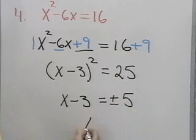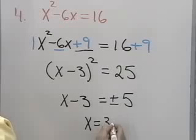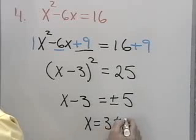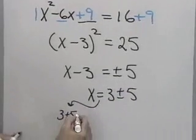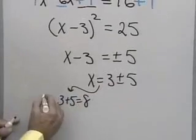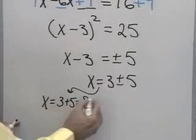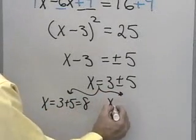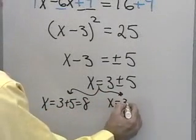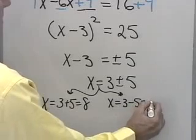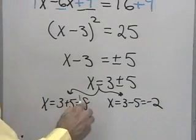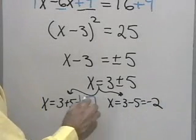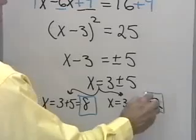Adding 3 to both sides, I get x equal 3 plus or minus 5. That gives me 3 plus 5, which is 8 for one solution, and x equal 3 minus 5, which is negative 2 for the other solution. So here I have two solutions: 8 and negative 2.